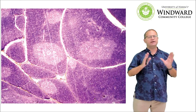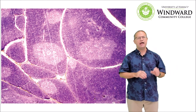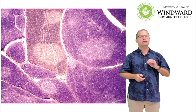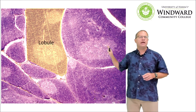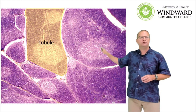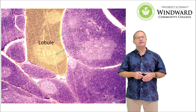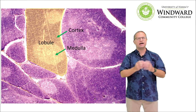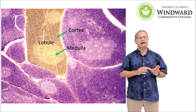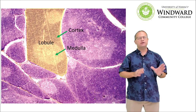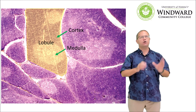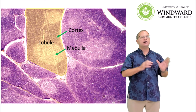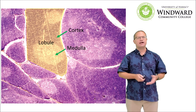Looking at the microanatomy or histology of the thymus, it is broken up into repeated structures called thymic lobules. Each lobule is made up of two different areas: a cortex on the outside and a medulla on the inside. The thymus secretes the hormone thymosin, which is important in maturation of white blood cells, but it has other functions as well that we'll learn about in a few more chapters.